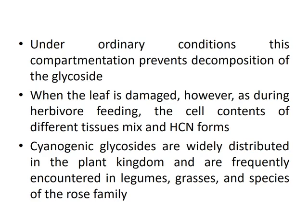When the leaf is damaged, however, as during herbivore feeding — herbivory is the process of eating plants by different insects. The insects which eat plants are known as herbivores. 'Herb' derives from plant and 'vore' means to eat. When damage occurs, the cell contents of different tissues mix and hydrogen cyanide forms. Cyanogenic glycosides are widely distributed in the plant kingdom and are frequently encountered in legumes, grasses, and species of the rose family.